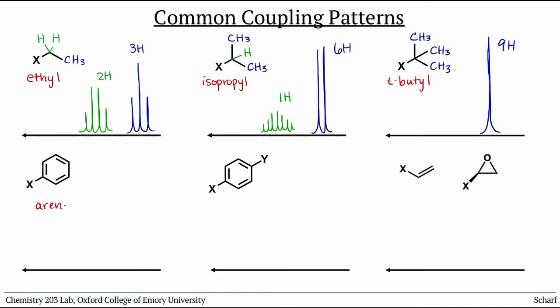Arenes typically show complicated clusters of overlapping peaks near 7 ppm, because there are many overlapping multiplets all in the same vicinity. But para-disubstituted benzene rings often show two clear distinct doublets, one for the 2 equivalent hydrogens in red, the other for the 2 equivalent hydrogens in blue.